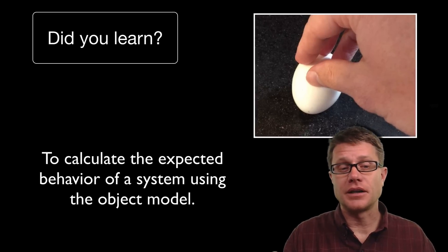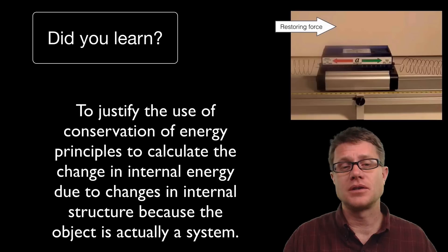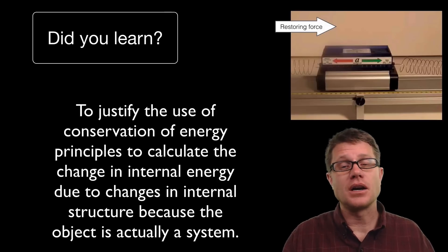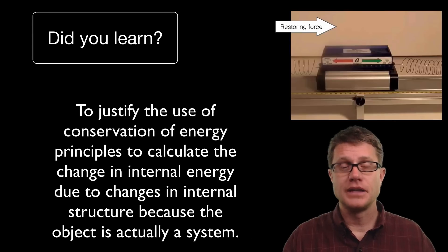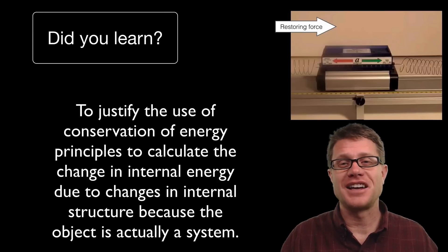And so did you learn to calculate the expected behavior of a system using the object model? You always start with the object model first. And if that does not work, if this fails, then you have to go to a systems model. And what is neat about a systems model is due to the conservation of energy, the amount of energy in that system is going to be conserved. It is just going to be converted from one object to another. Hopefully you learned that and I hope that was helpful.